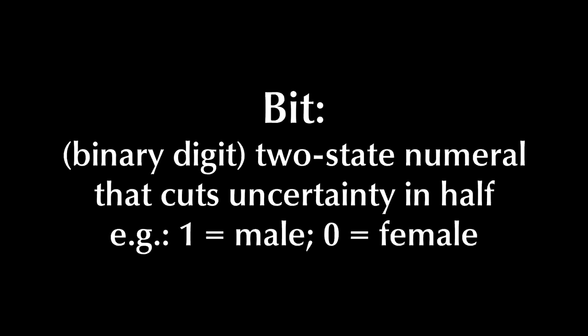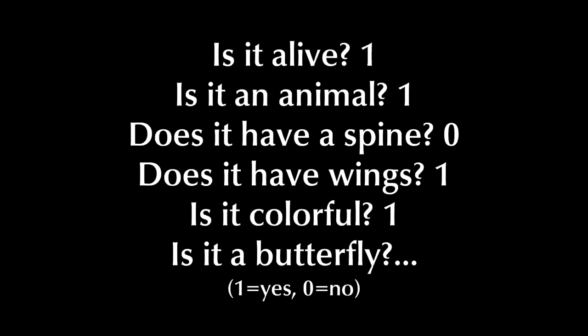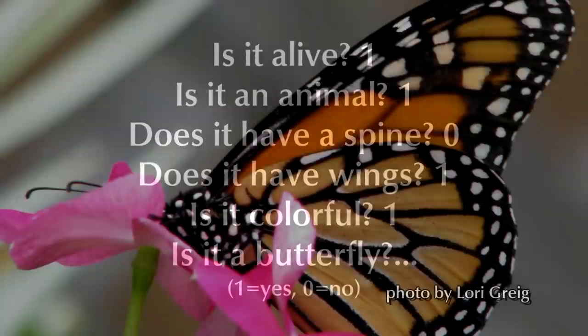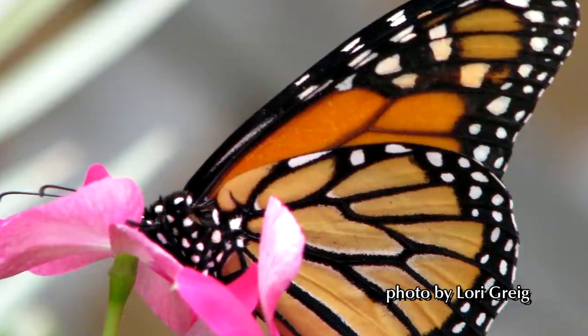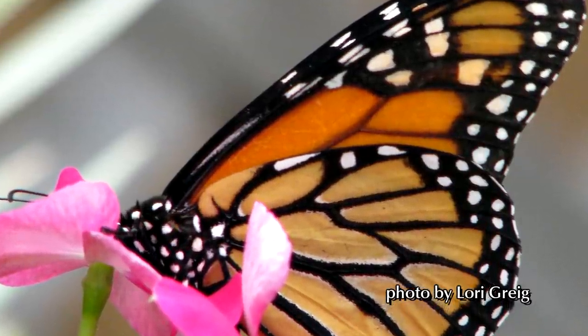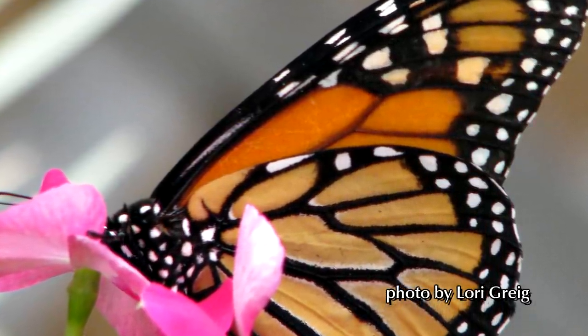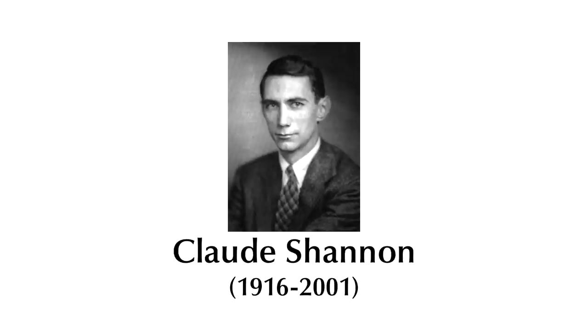Ever played the game 20 Questions? A series of yes or no questions can very quickly identify anything the other person might be thinking about, and each question is a bit. So in 20 Questions, your goal is to narrow down the entire universe to whatever it is they're thinking about by obtaining less than 20 bits of information. The guy who first worked this out is named Claude Shannon, and his theory — information theory — is also known as Shannon theory.